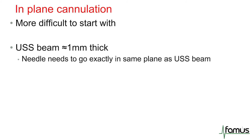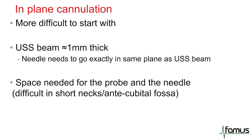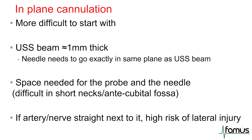If you imagine that the ultrasound beam is about one millimeter thick, that means you have very little room for maneuver either side when advancing your needle. The other problem with in-plane cannulation, particularly for peripheral vascular access, is that you need lots of space for both the probe and the needle, and a relatively long and straight vein to access — things that can often be difficult to come by. As opposed to out-of-plane cannulation where the risk is damaging structures below the vessel, when performing in-plane cannulation it's more likely you'll cause lateral injury, so you want to be aware of veins or structures which are lateral to the vessel of choice.